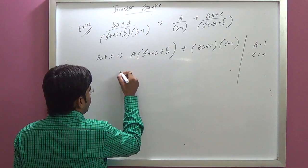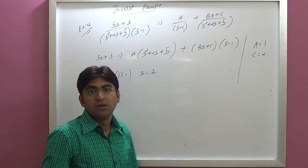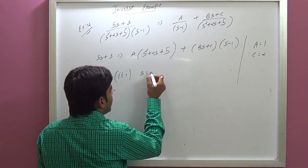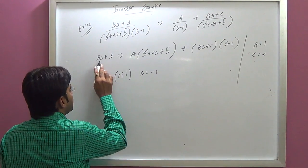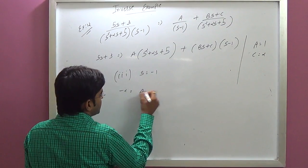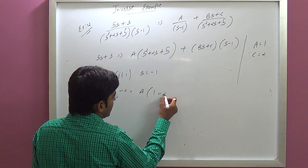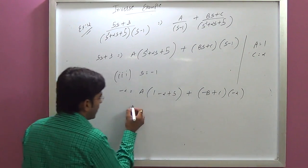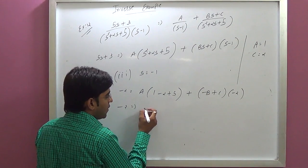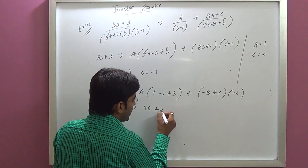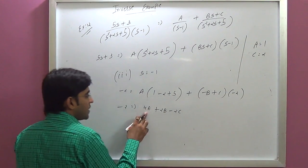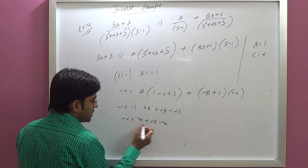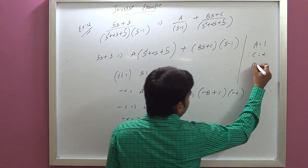Third, to find B, we put S equal to minus 1. Substituting and simplifying: minus 2 equals 4A plus 2B minus 2C. With A equals 1 and C equals 2, after cancellation, 4 cancels and B equals minus 1.